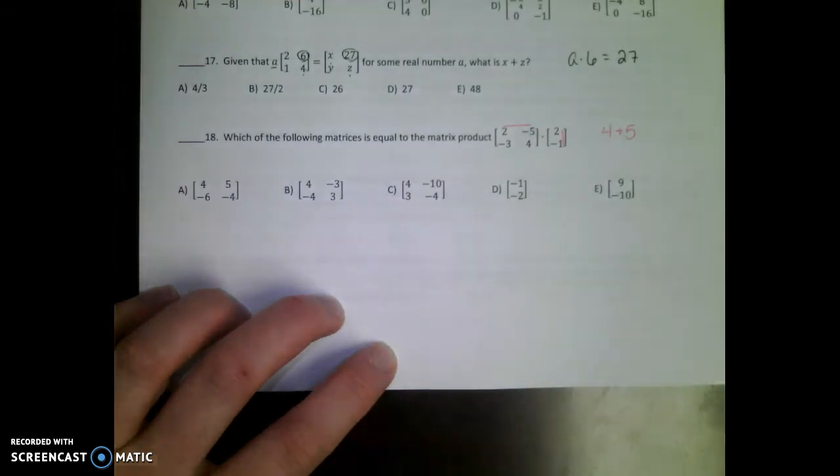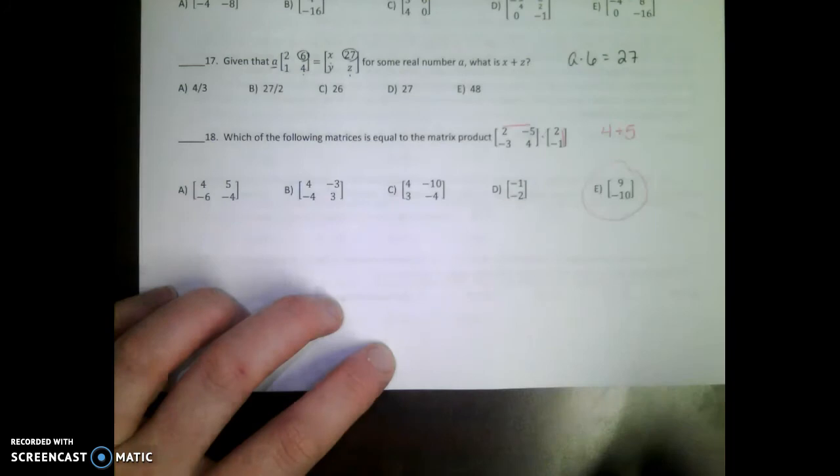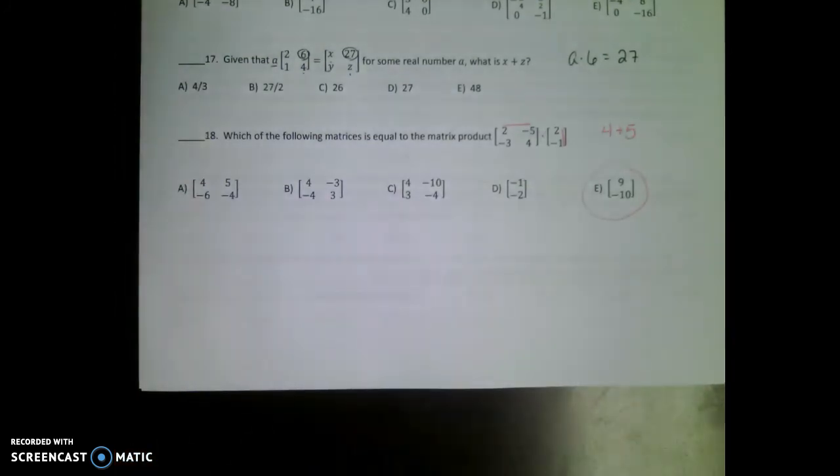Well, if you know that matrix multiplication is supposed to be rows times columns, 2 times 2 is 4. Negative 5 times negative 1 is positive 5. What do you get when you add 4 and 5 together? 9. So which matrix has to be the answer? E, the only one that has 9 in it. So you can probably get that answer in like 10 seconds, and that's huge on the ACT. If you can get one whole question done in 10 seconds instead of a minute or two.